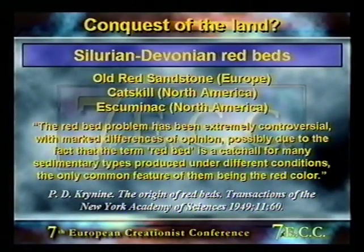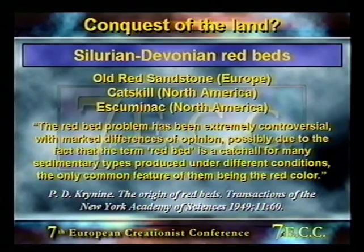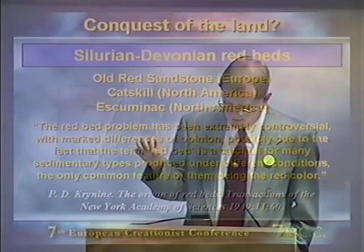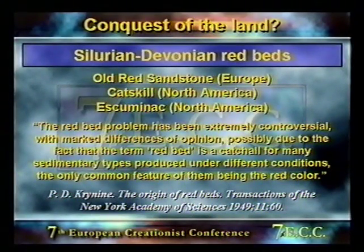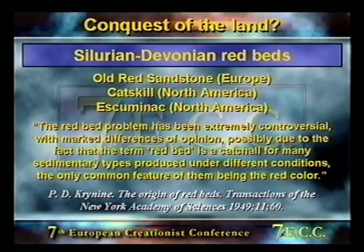Support for the drying pond hypothesis came from the nature of Silurian and Devonian rocks of America and Europe — the Old Red Sandstone in Europe and the Catskill and Escuminac formations in North America. These rocks are characteristically stained red by iron oxide — so-called red beds — often interpreted as products of hot semi-desert environments with seasonal wetness. However, one geologist reviewing red bed data noted: 'The red bed problem has been extremely controversial, possibly due to the fact that the term red bed is a catch-all for many sedimentary types produced under different conditions, the only common feature being the red colour.'